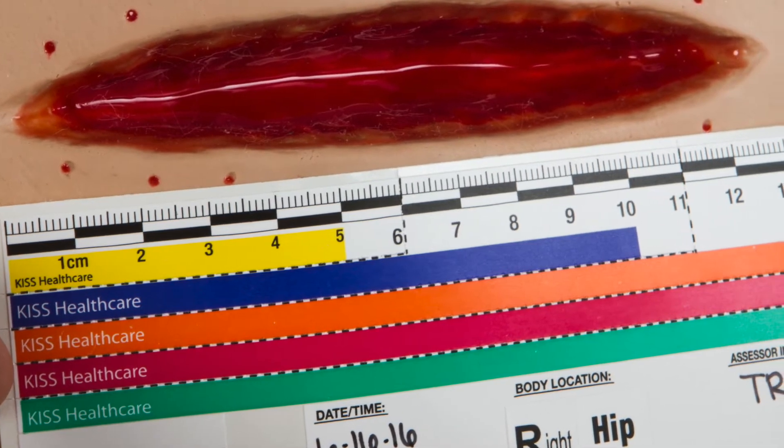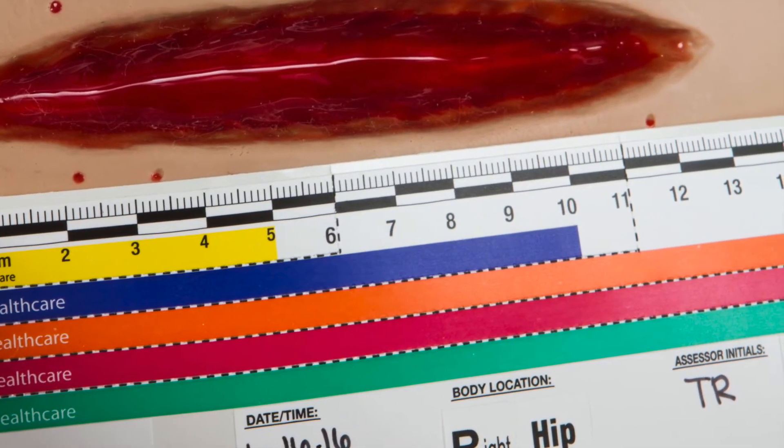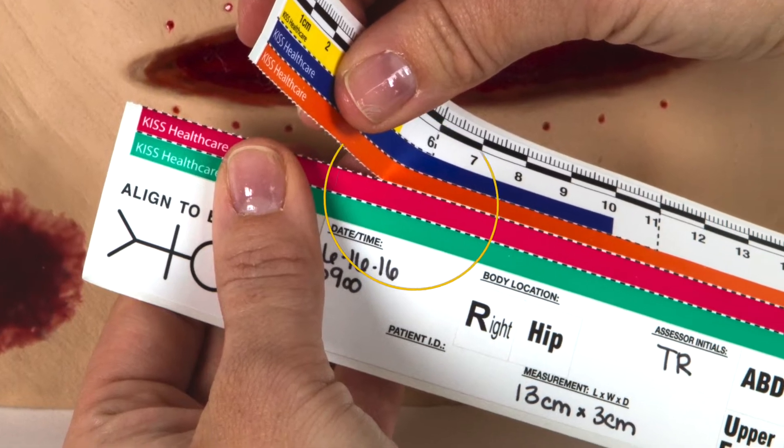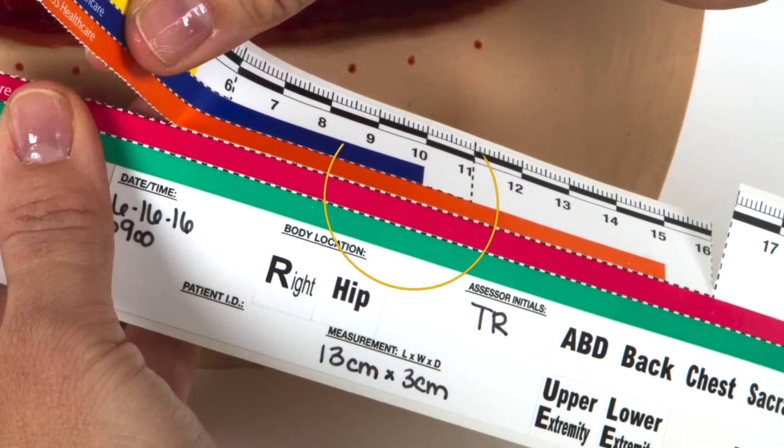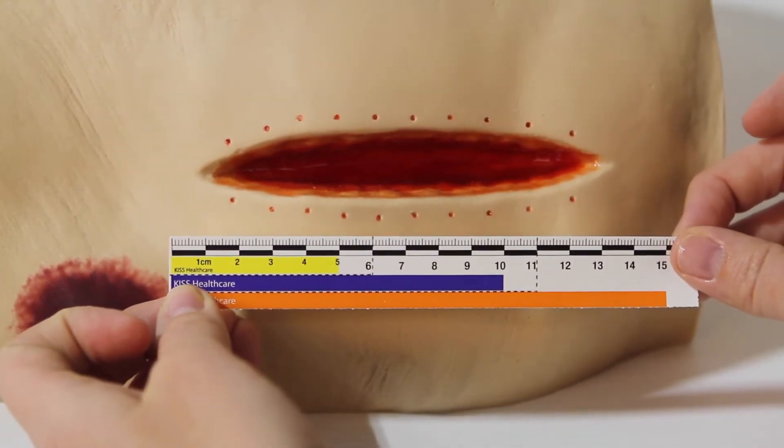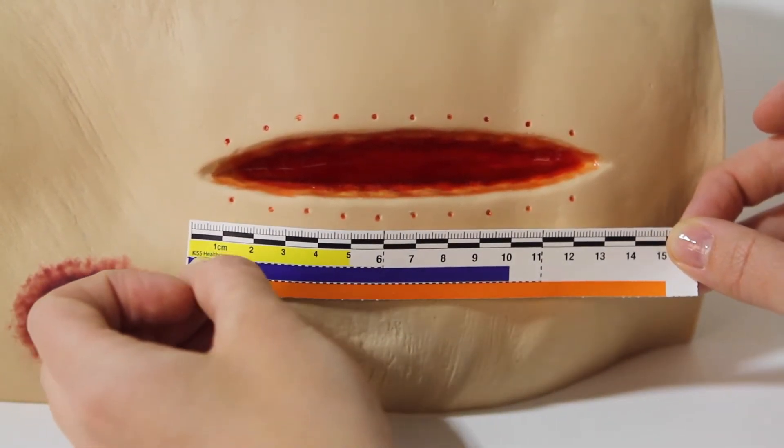Tear the desired length along the perforated lines. Next, tear down the length of the ruler, removing all the smaller bars. Remove the ruler from the backing and apply the ruler next to the wound. Be sure to leave enough healthy skin between the wound and the ruler.